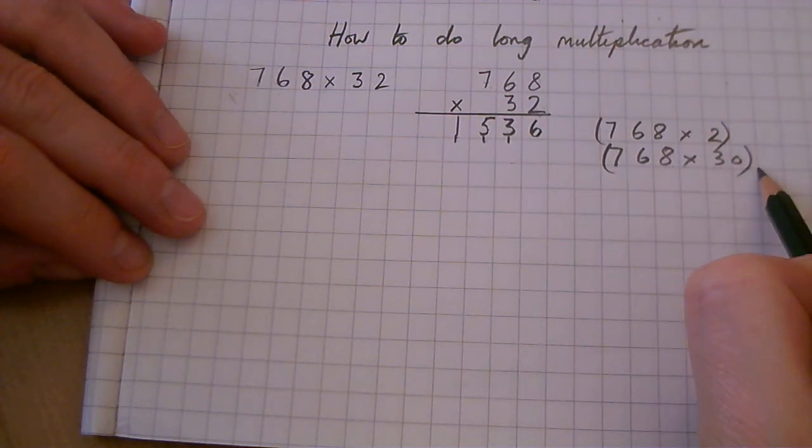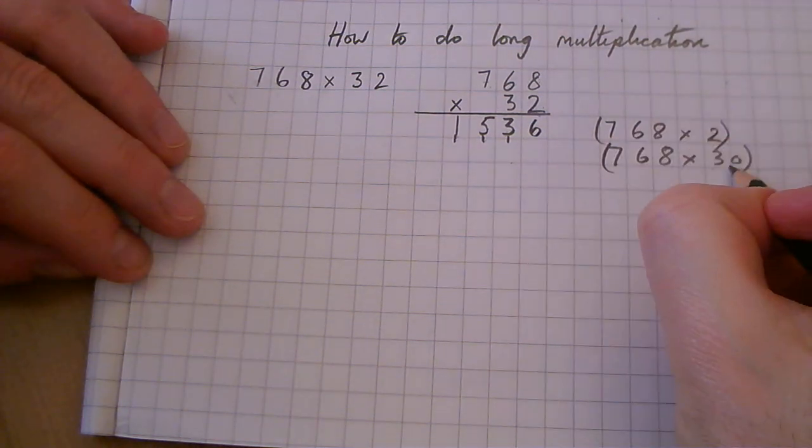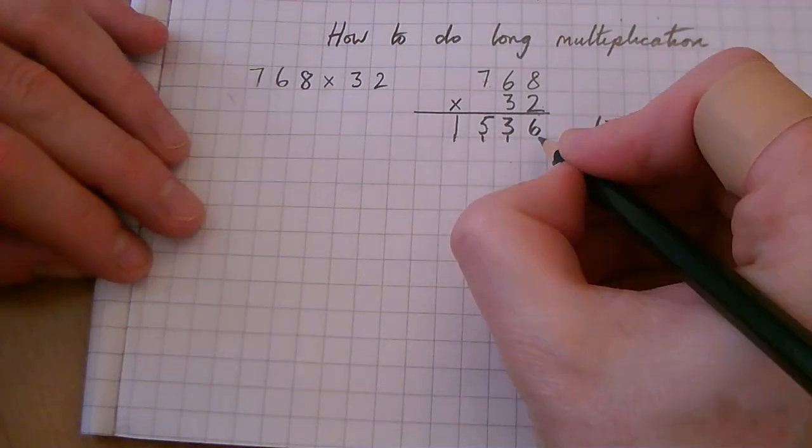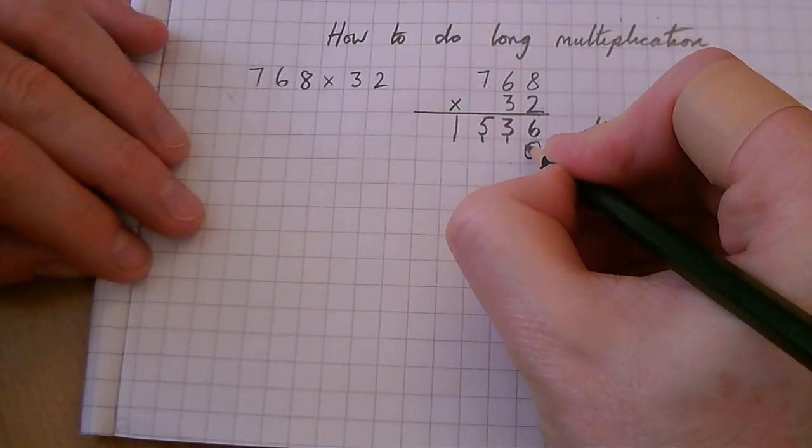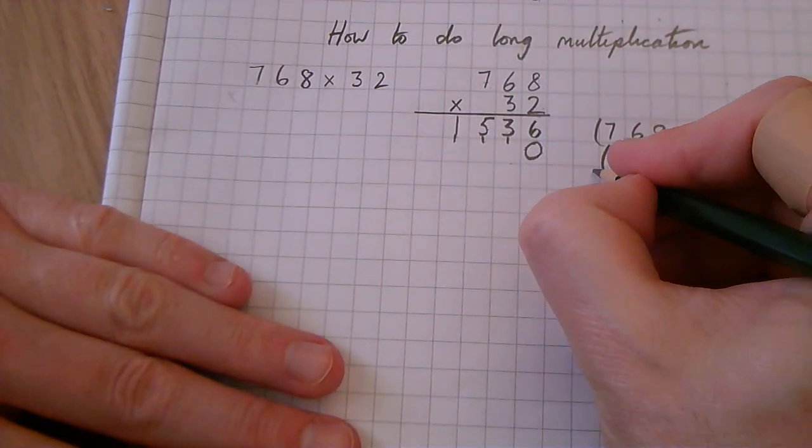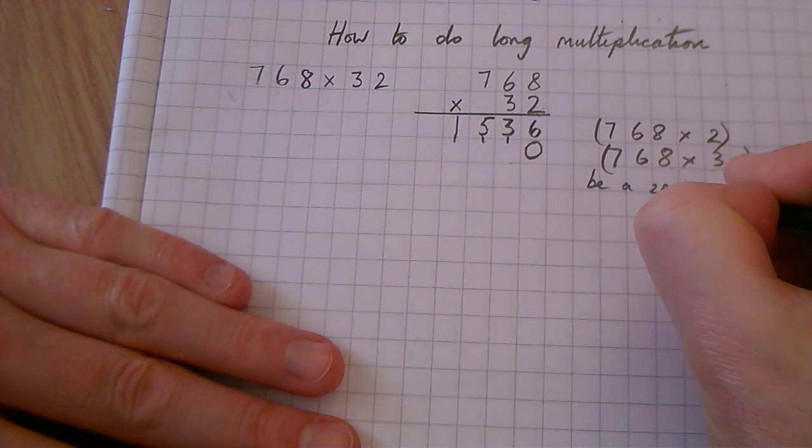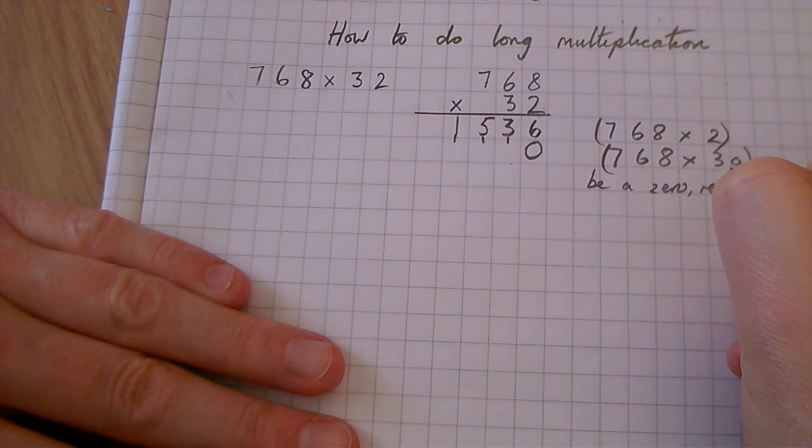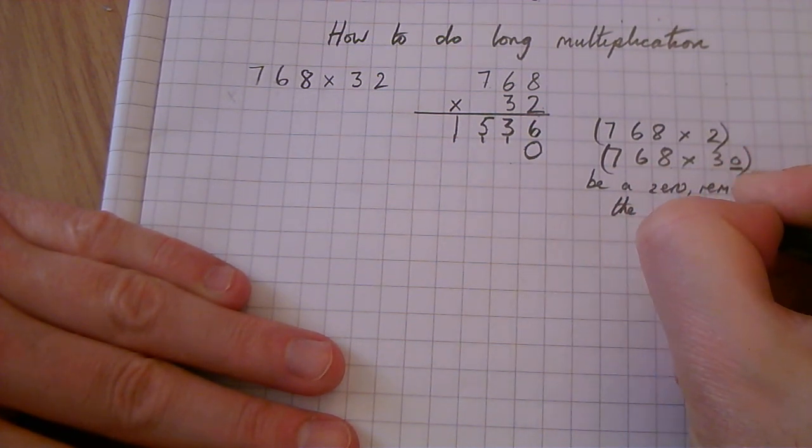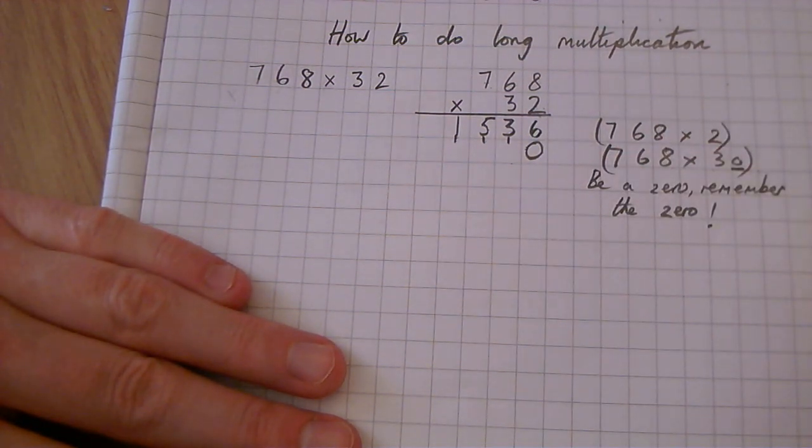768 times 30. Now because we're multiplying by a multiple of 10, we're going to put a 0 here. Now this is something that people sometimes forget. There's a little phrase that says: be a hero, remember the 0.